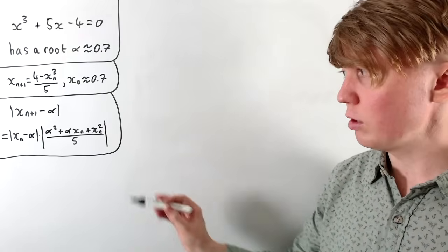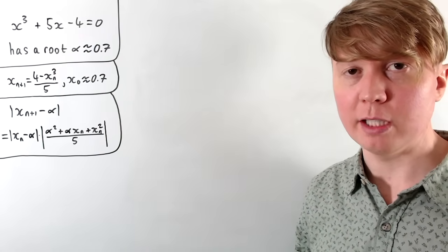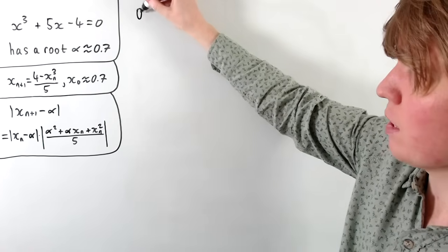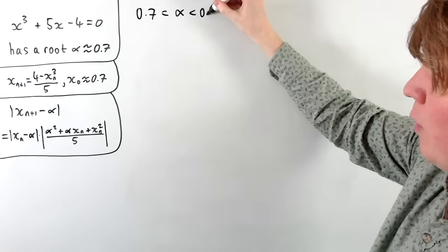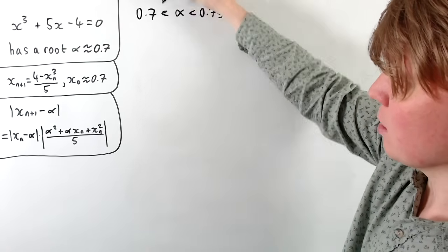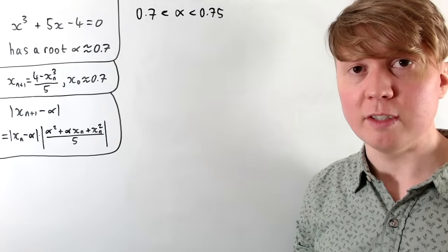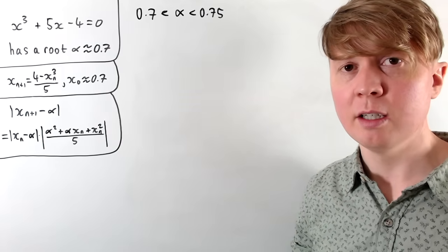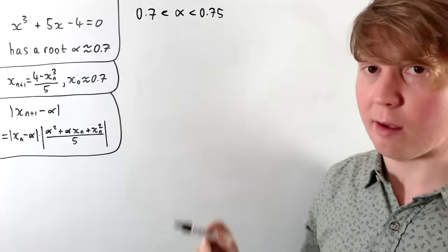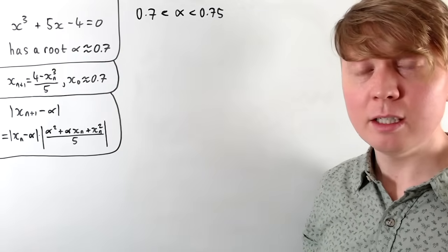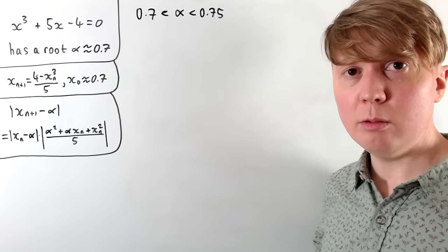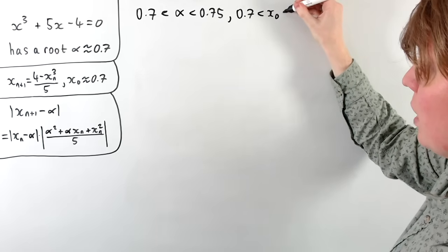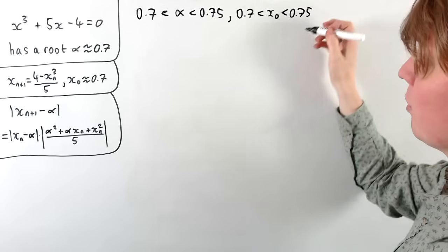Before we can get bounds on the quadratic term, we find individual bounds on alpha and each x_n. We already know that alpha is between 0.7 and 0.75: substituting x equals 0.7 gives something negative on the left-hand side, and substituting 0.75 gives something positive, so there must be a root in between. We can choose x_0 to be in the same interval, which is sensible since that's where the root is.